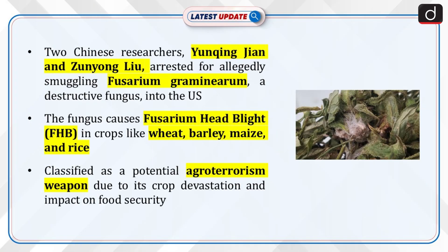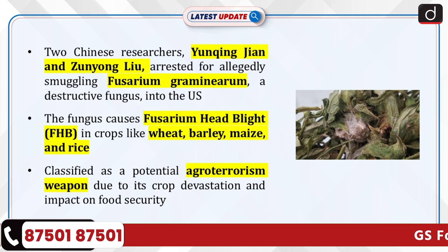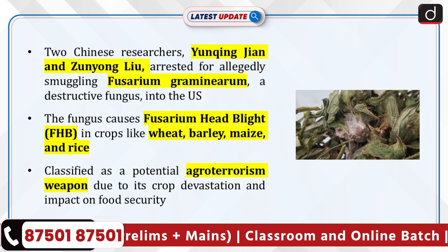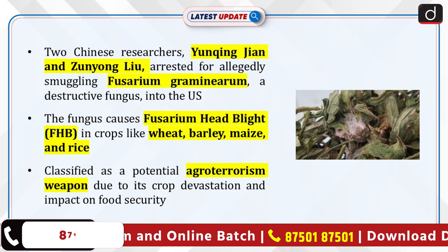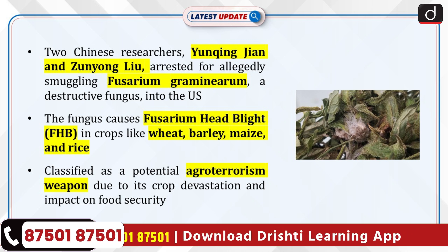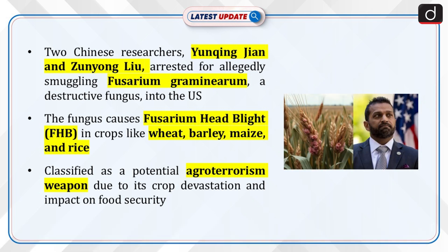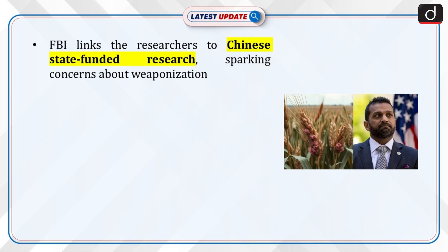Two Chinese researchers, Yunqing Jian and Zun Yong Liu, were arrested for allegedly smuggling Fusarium graminearum, a destructive fungus, into the US. The fungus causes Fusarium head blight (FHB) in wheat, barley, maize, and rice. Fusarium graminearum is classified as a potential agro-terrorism weapon due to its ability to devastate crops and disrupt food security. The FBI has linked the researchers to Chinese state-funded research, raising concerns about the fungus being weaponized.